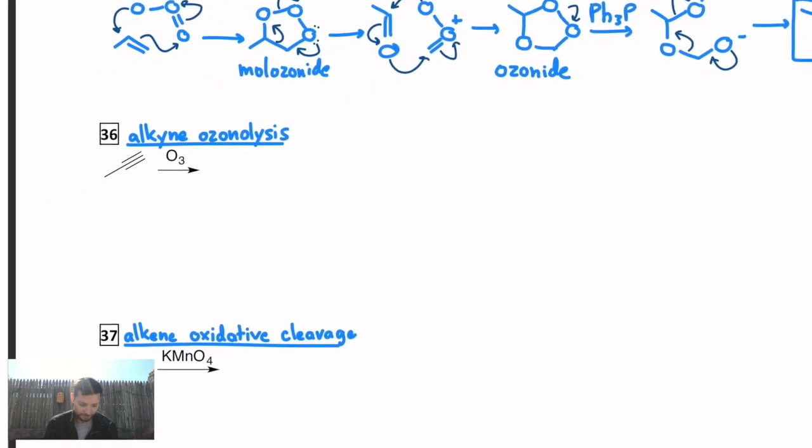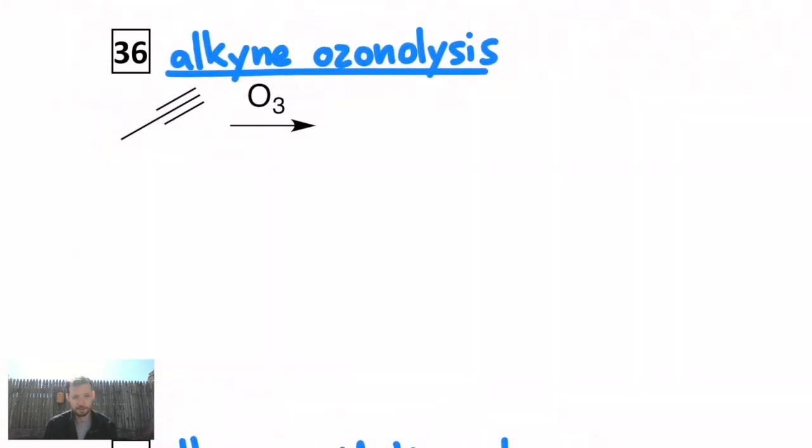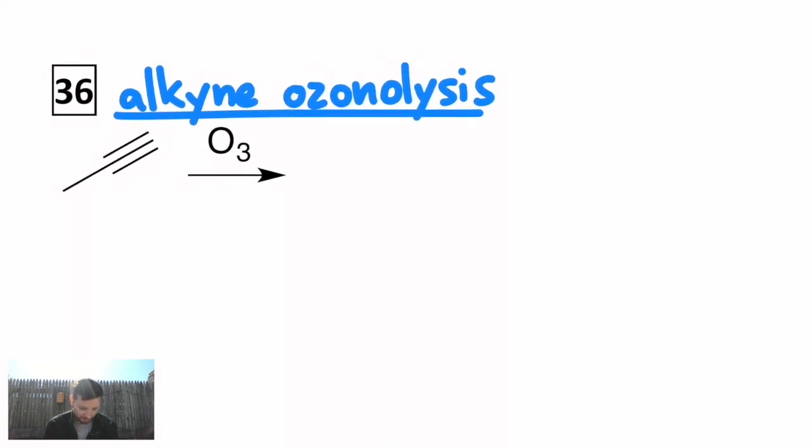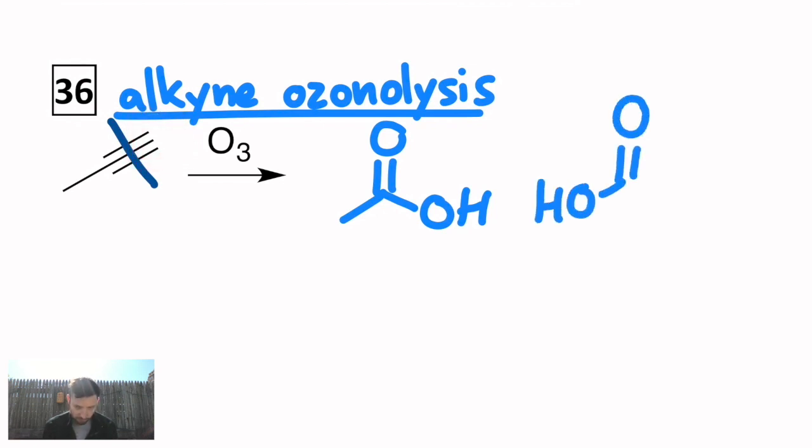So let's try another one. We can also do ozonolysis on alkynes. However, you don't get aldehydes. You actually get carboxylic acids. You can still think of it as cutting the carbon-carbon bond completely. In this case, I'll get a two-carbon carboxylic acid and a one-carbon carboxylic acid. It looks like that. So I get acetic acid and formic acid in this example.